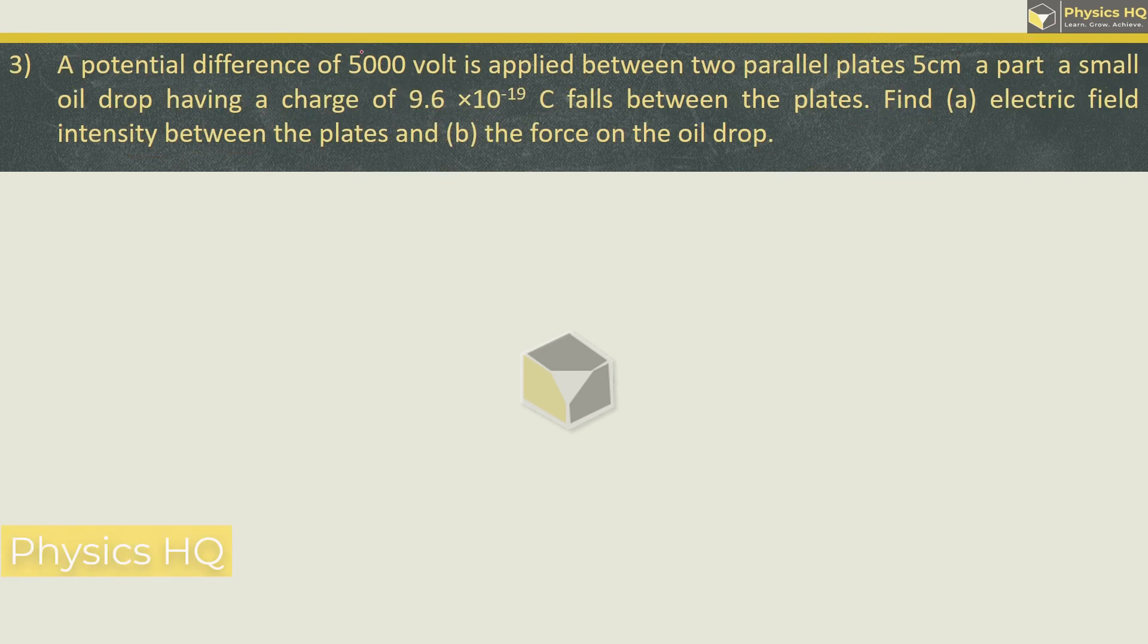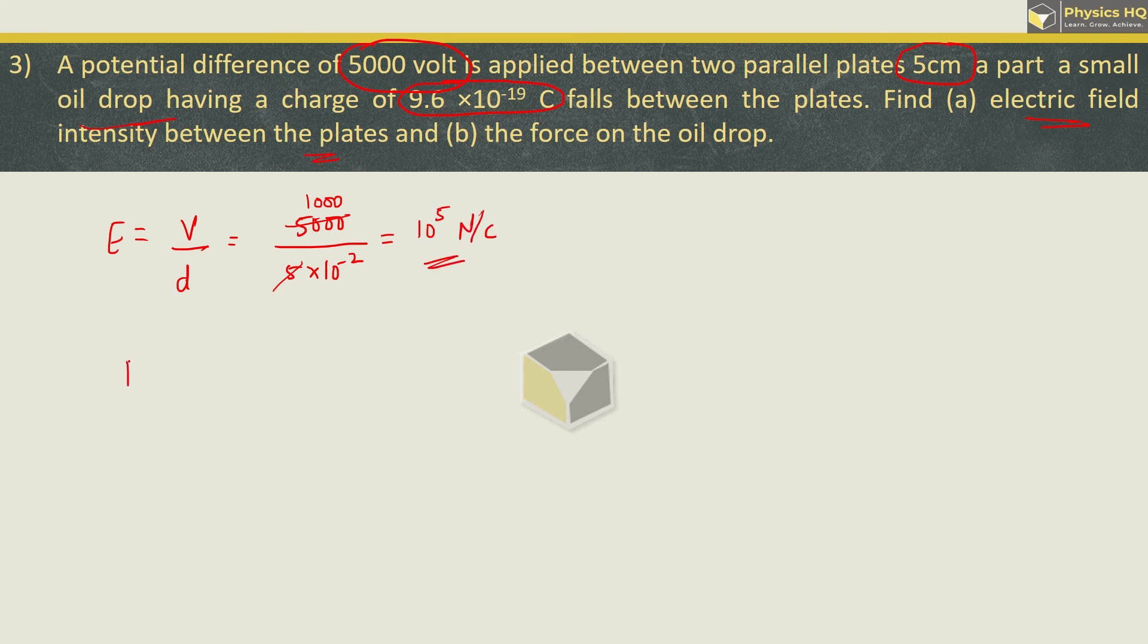Next sum: A potential difference of 5000 volt is applied between two parallel plates which are 5 centimeter apart. A small oil drop having a charge of 9.6 into 10 raise to minus 19 coulomb falls between the plates. We have to find electric field intensity first. Electric field intensity is potential upon the distance between the plates, so 5000 divided by 5 into 10 raise to minus 2 meter, we got 10 raise to 5 Newton per coulomb. Then the force on the oil drop is given by the electric field into the charge, so 10 raise to 5 times 9.6 into 10 raise to minus 19, we got 9.6 into 10 raise to minus 14 Newton as the force on that oil drop.